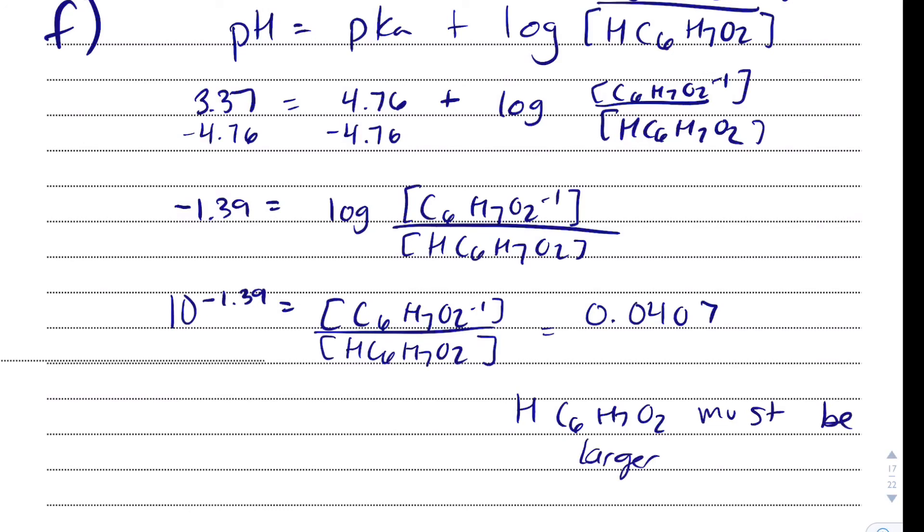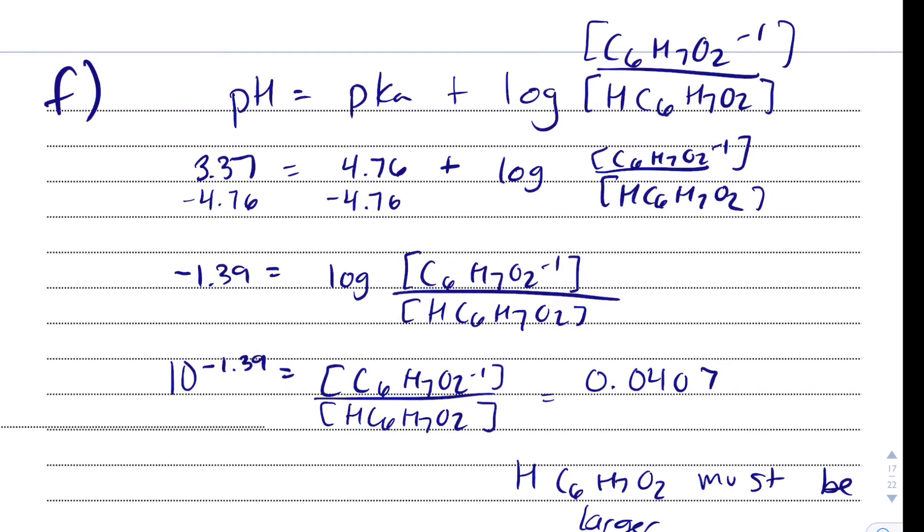Another great way that involves a little bit less math is just by saying since the pH is less than the pKa, and the pKa represents when my conjugate base and acid are in equal concentration, since my pH is less than that at 3.37, we must have more of the acid in our solution.